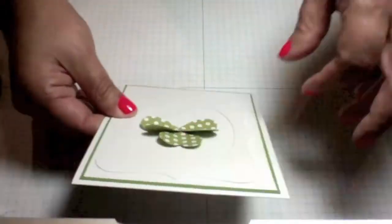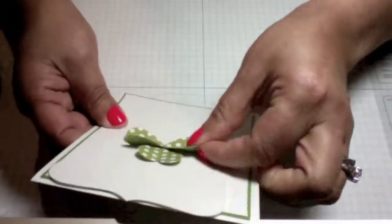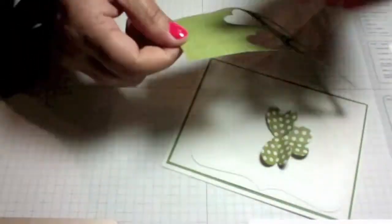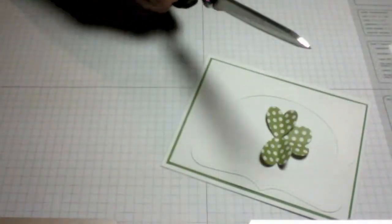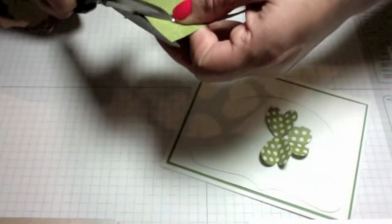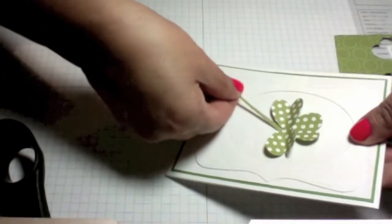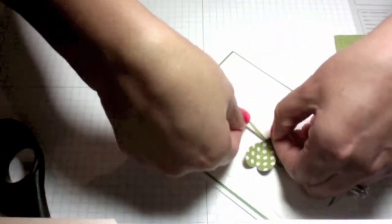Next you want to cut the stem for the clover. I'm just using the Polka Dot Parade designer paper from Stampin' Up. That looks like a good length so I'm going ahead and placing it, just kind of lifting the hearts to place it underneath.